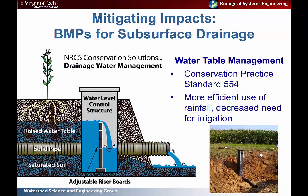For mitigating impacts from subsurface drainage, water table management is one of the bigger efforts. As discussed with ditches, it involves the ability to actually control the water table in the field rather than just lowering it to the tile drain level. At times of less precipitation or when a crop is dormant, you can raise the water table in the field — that saturation drives the denitrification process that removes nitrogen. This is conservation practice standard 554, and a big benefit is more efficient use of rainfall and decreased need for irrigation if the system is actively managed.